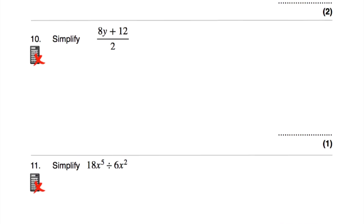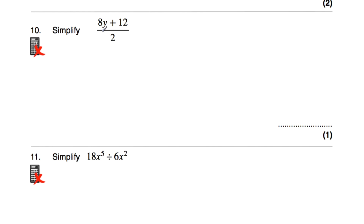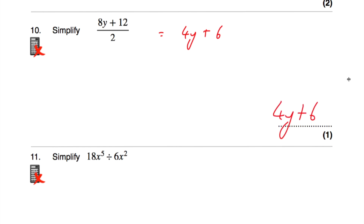Question number 10: simplify (8y + 12) divided by 2. We're dividing the whole numerator by 2, so divide both terms: 8y divided by 2 is 4y, and 12 divided by 2 is 6. So the answer is 4y + 6. We can check: (4y + 6) multiplied by 2 gives 8y + 12. ✓